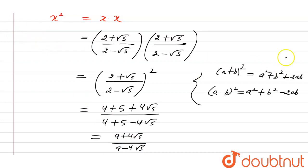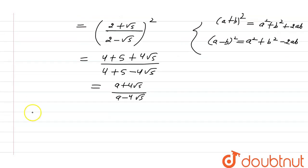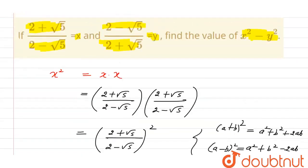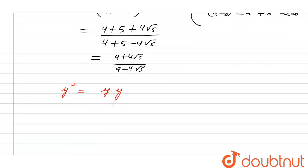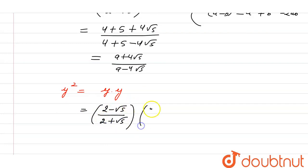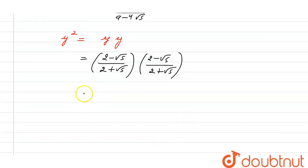Now we will calculate the value of y². y² is equal to y into y. The value of y is (2 - √5) divided by (2 + √5), multiplied by (2 - √5) divided by (2 + √5).